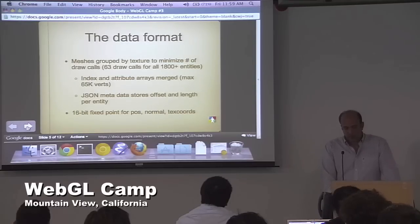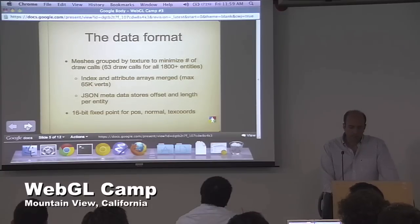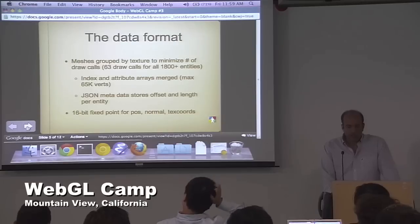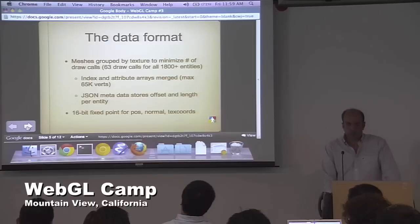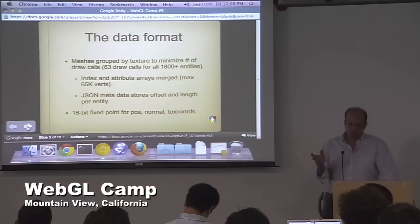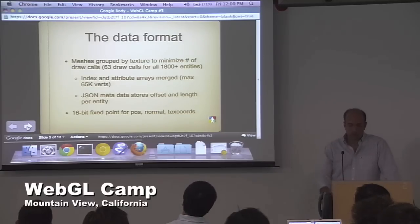Since we want to render fast but not lose the detail of individual entities, with 1,800 entities we couldn't issue 1,800 draw calls every time we wanted to render the scene. So what we ended up doing was collecting entities that were using the same materials — essentially the same texture — into one large group, so we could issue a single draw call to render a whole bunch of entities at once. We ended up with 63 separate draw calls to render the entire human body.